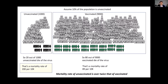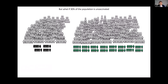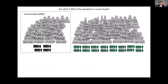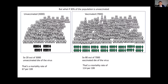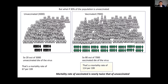But what if the true proportion was actually 30% unvaccinated? Then things look very different. Now we've got 3,000 unvaccinated and 7,000 vaccinated. So 20 out of 3,000 unvaccinated die — a mortality rate of 67 per 10k — and in the vaccinated it's a mortality rate of 114 per 10k.